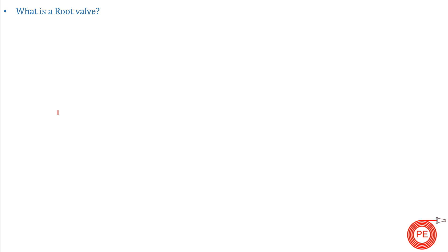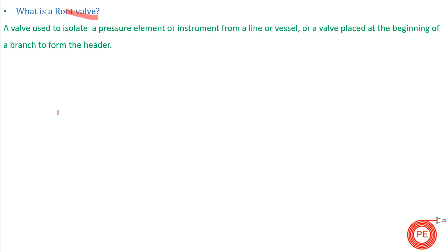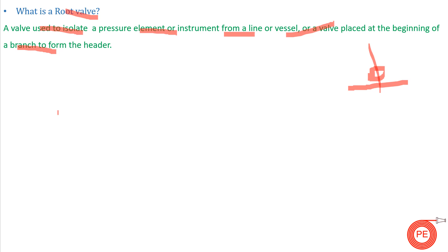The next question is: what is a root valve? A root valve is used to isolate a pressure element or instrument from a line or vessel. It is placed at the beginning of a branch from the header — when an instrument tapping is taken from the main system, a root valve is placed there as an isolation valve to protect the instrument from the process fluid.